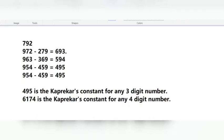Continuing with 693: in descending order it is 963 and ascending order is 369. 963 minus 369 gives 594. Rearranging 594: descending order gives 954 and ascending order gives 459. 954 minus 459 gives 495. This 495 is the Kaprekar's Constant for any 3-digit number. Repeating again: 495 becomes 954 in descending and 459 in ascending. 954 minus 459 again gives 495 — the same number keeps repeating.